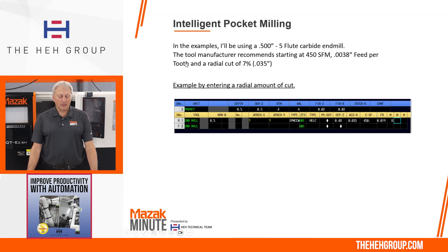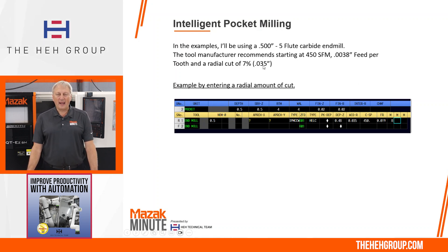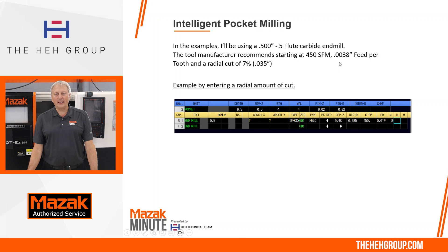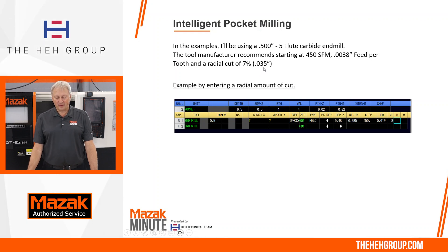In the example I'll be using a half-inch, five-flute end mill. The tool manufacturer says the starting surface feet should be 450, the feed per tooth is 0.0038 inches, and the radial cut is seven percent — 35 thousandths. That gives a feed per revolution of 19 thousandths.